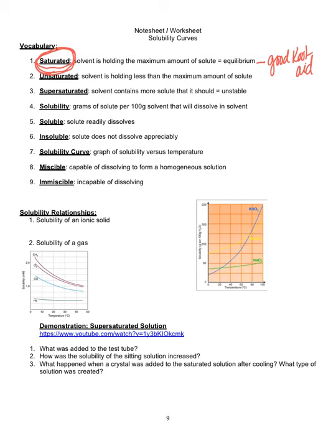If you're unsaturated, it's holding less. If it's supersaturated, it has more than it should, and it's very unstable. Usually the only way you can get that to happen is by heating it up. If you increase the temperature, it's going to allow more to become dissolved, but it's a super unstable system. As you'll see in the video at the bottom, just one little crystal as it comes down to room temperature can disrupt the whole thing.